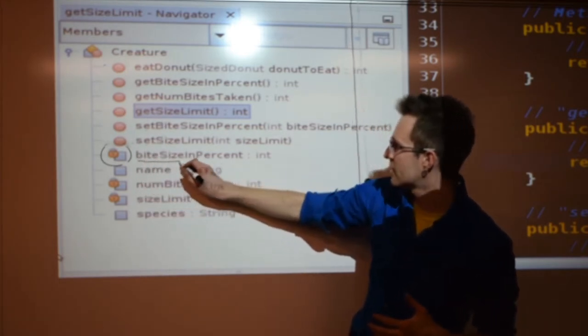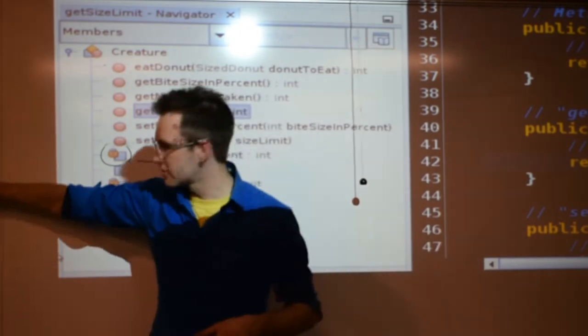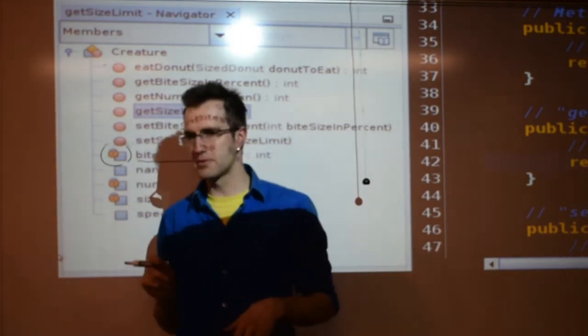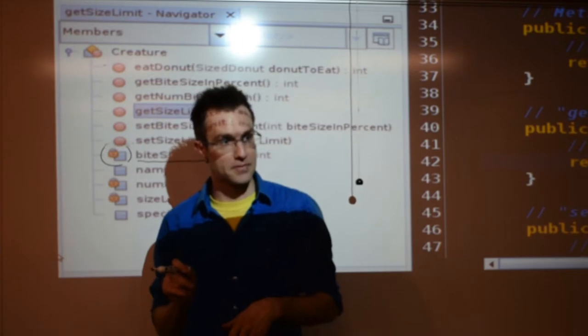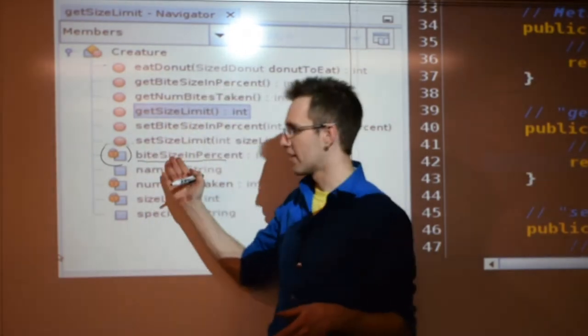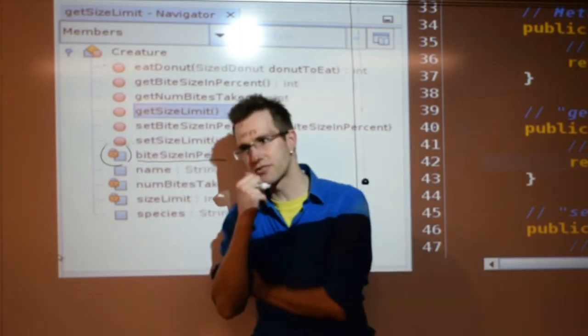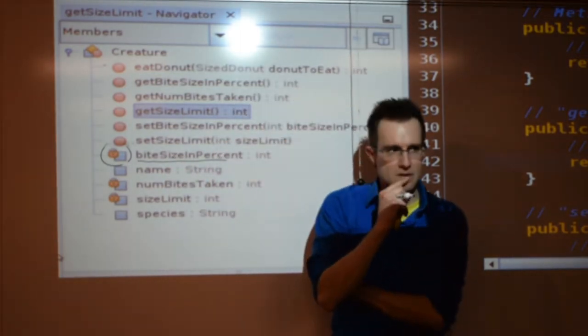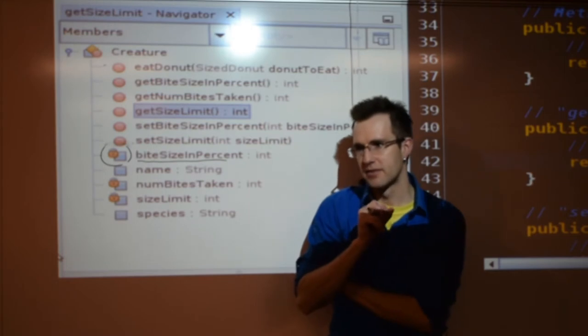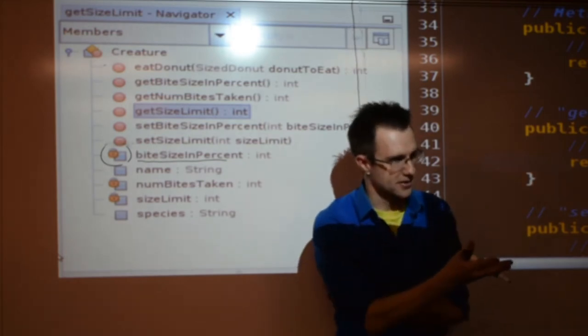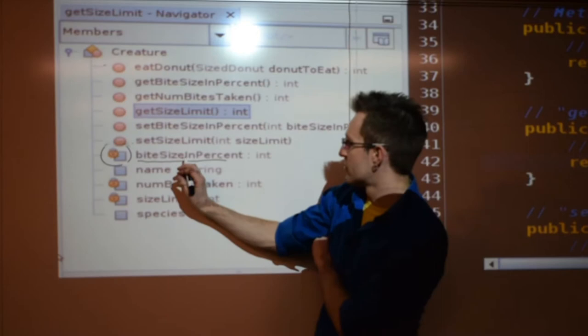So, look. This is Bite Size in Percent. So, what we're saying is this particular creature, a turtle, only eats 25% of a donut at a time. If it's a bear, it might eat 100% of donut at a time. Why would we want to control setting our bite size? What is an illogical bite size? Negative. A negative bite size. So, in other words, I don't just want, I don't want the user to be able to slap any old number in this integer container.